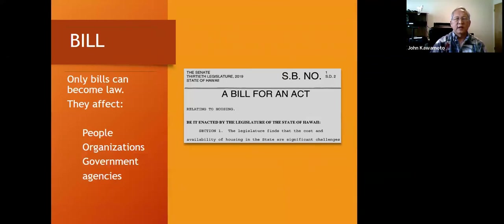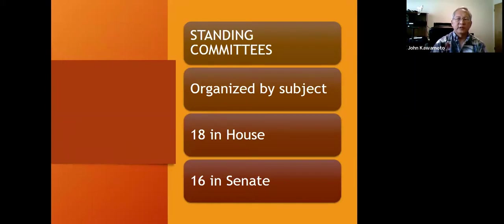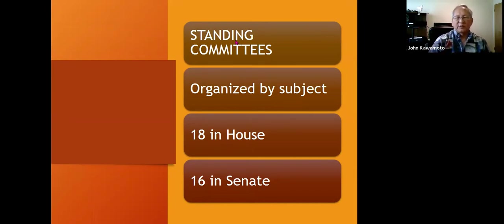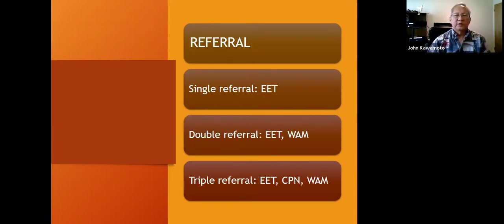A bill is a document — it's a proposal. Only bills can become law; they affect people, organizations, or government agencies. There are standing committees in the House and Senate organized by subject — for example, economic development or tourism. There are 18 standing committees in the House and 16 in the Senate. After bills are introduced, they're referred to committee for consideration. The committees do most of the work in the legislature.